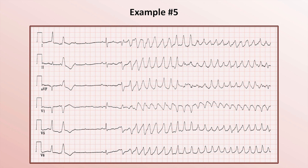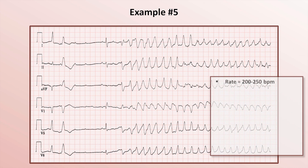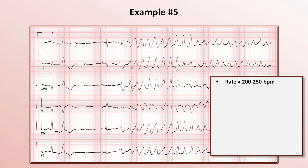The rate is very hard to say since it's irregularly irregular and we don't have a full 10 seconds to evaluate it, but we can estimate it's somewhere between 200 and 250 beats per minute. Once the rate exceeds 200, an exact number is not very helpful.